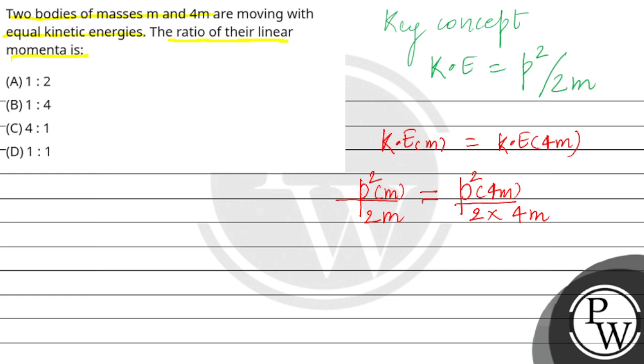Here, what is our ratio? p squared m and p squared for 4m comes out to be 1 by 4.